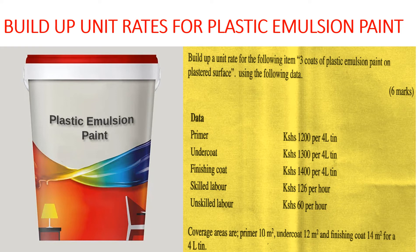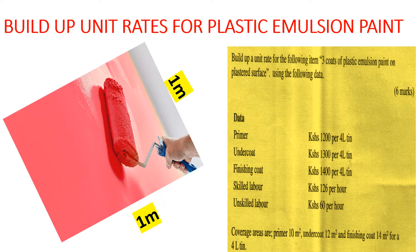Building up unit rates is a very essential element when we want to estimate the cost of items or works in building construction. On today's tutorial, we want to look at the cost of doing plastic emulsion paint — we want to build up the unit rate for three coats of plastic emulsion on a plastered surface. We've been given the data and we'll consider an area of one meter by one meter.